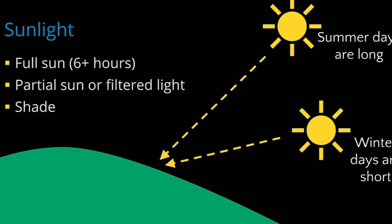If you require full sun to grow vegetables, fruits, or other sun-loving plants, you'll want to make sure that you get at least six hours of sun during the day.